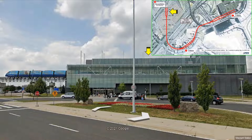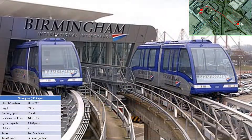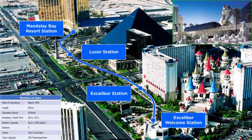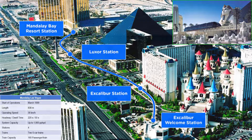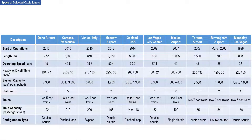This is the cable liner at the Birmingham International Airport. This is the Mandalay cable liner in Las Vegas, USA. These are selected cable liner installations with their corresponding specifications, indicating that cable liners can have different configurations and specs to suit the needs of the customer.